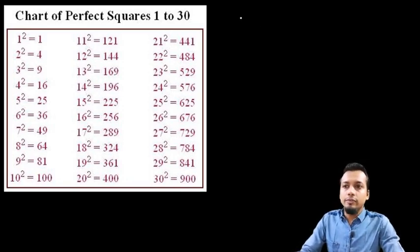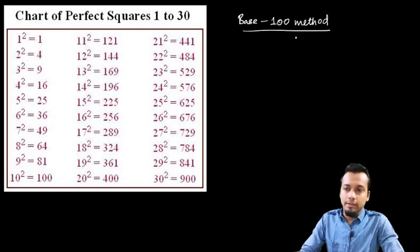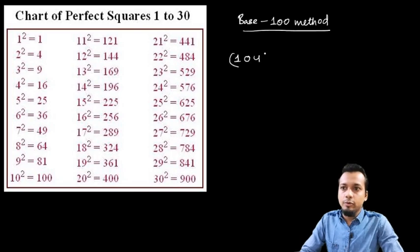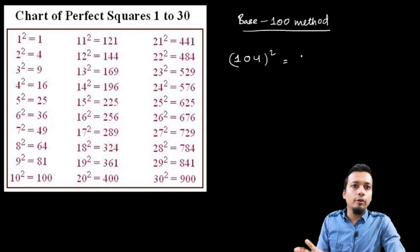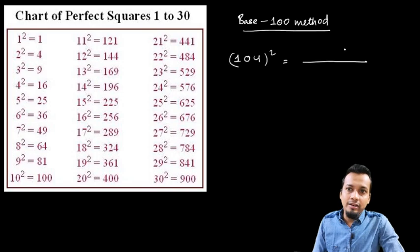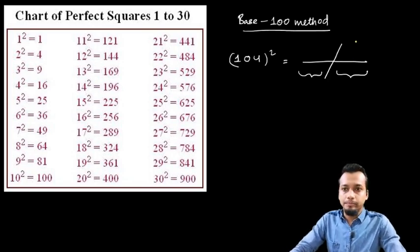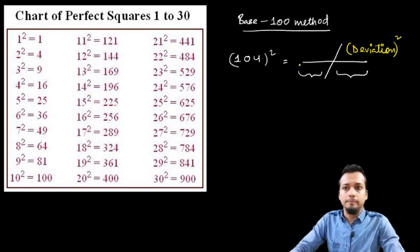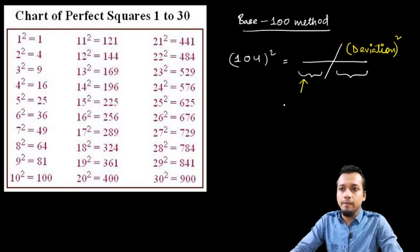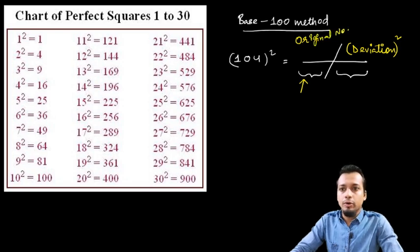The name of the method is the Base 100 Method. In this method, suppose we take the number 104 squared — we need to find the square of this large number. We'll find the answer in two parts: on the right side we write the deviation square, and on the left side we write the original number plus the deviation.